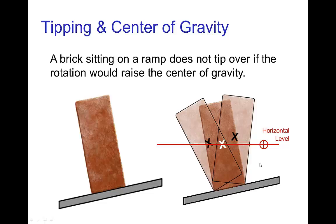In this situation we know that at this angle the brick does not tip over. Because if the brick tipped over towards either side, the brick would have to raise its center of gravity and it won't do that. It will only tip over if rotating would lower its center of gravity.